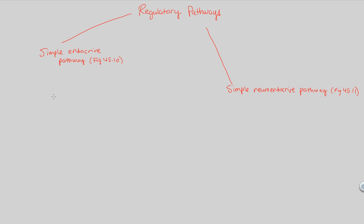In the simple endocrine pathway, we have endocrine cells involved — cells that secrete something. These endocrine cells respond, and that response is directly to a stimulus. We maintain a steady state and understand the body's set point, its normal range. When stimuli come in and upset that set point or normal range, we see different responses directly related to the endocrine cells that produce them.